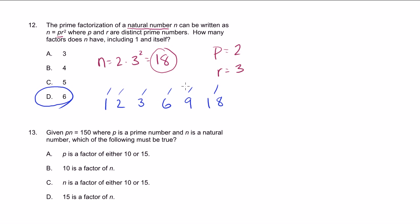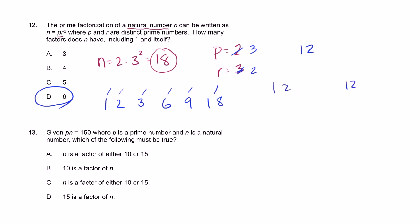You could try it out with other numbers. Make p equal to 3 and r equal to 2. Then you'd have 3 times 2 times 2, giving the number 12. Its factors are 1 and 12, 2 and 6, and 3 and 4 — exactly six factors.